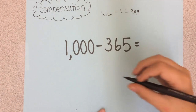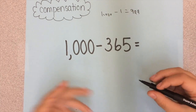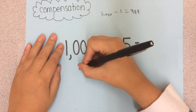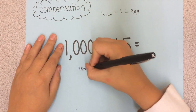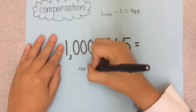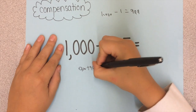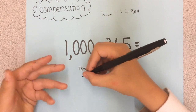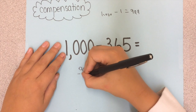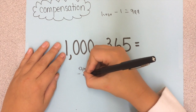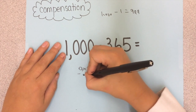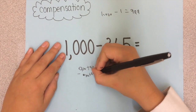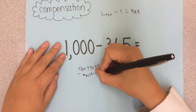And now we have to use expanded form. So we have to expand 900 plus 90 plus 9, and do the same with 365 as 300 plus 60 plus 5.